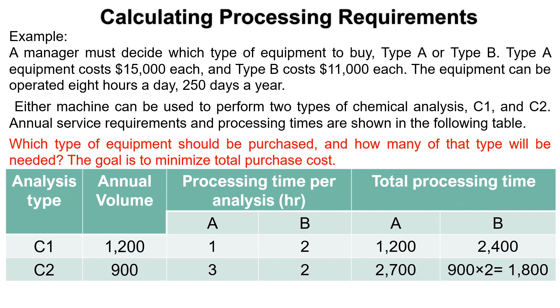For analysis C2 with equipment B, the total processing time equals 900 times 2, equal to 1,800.